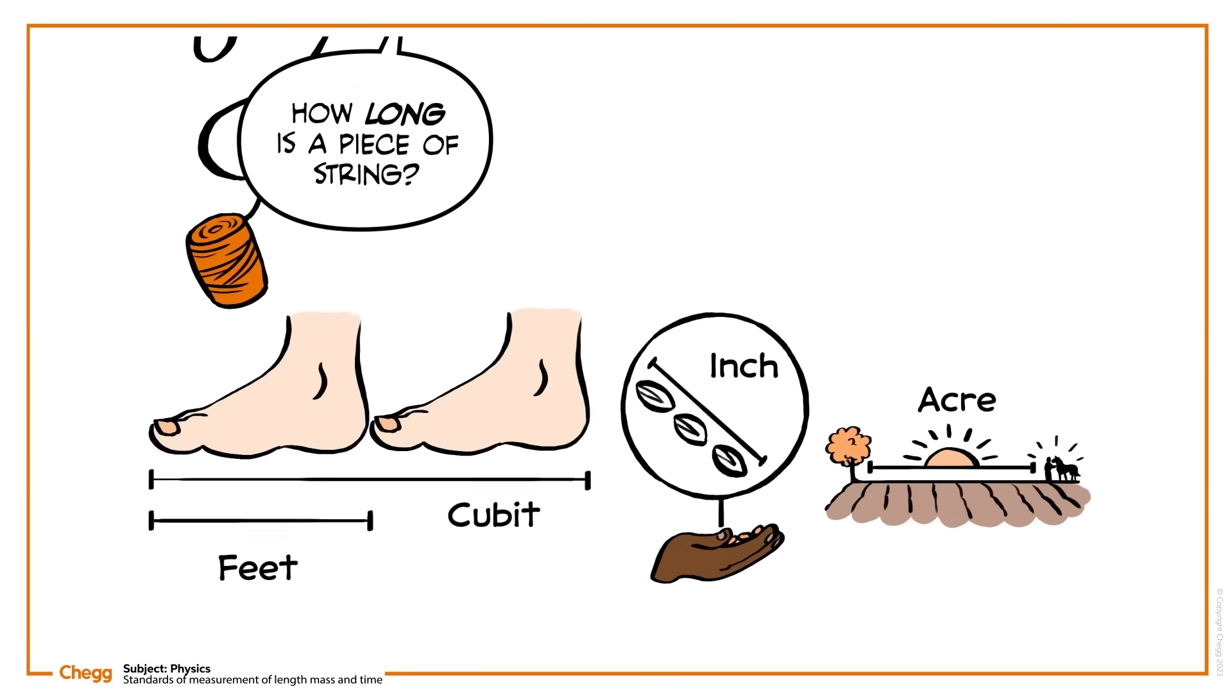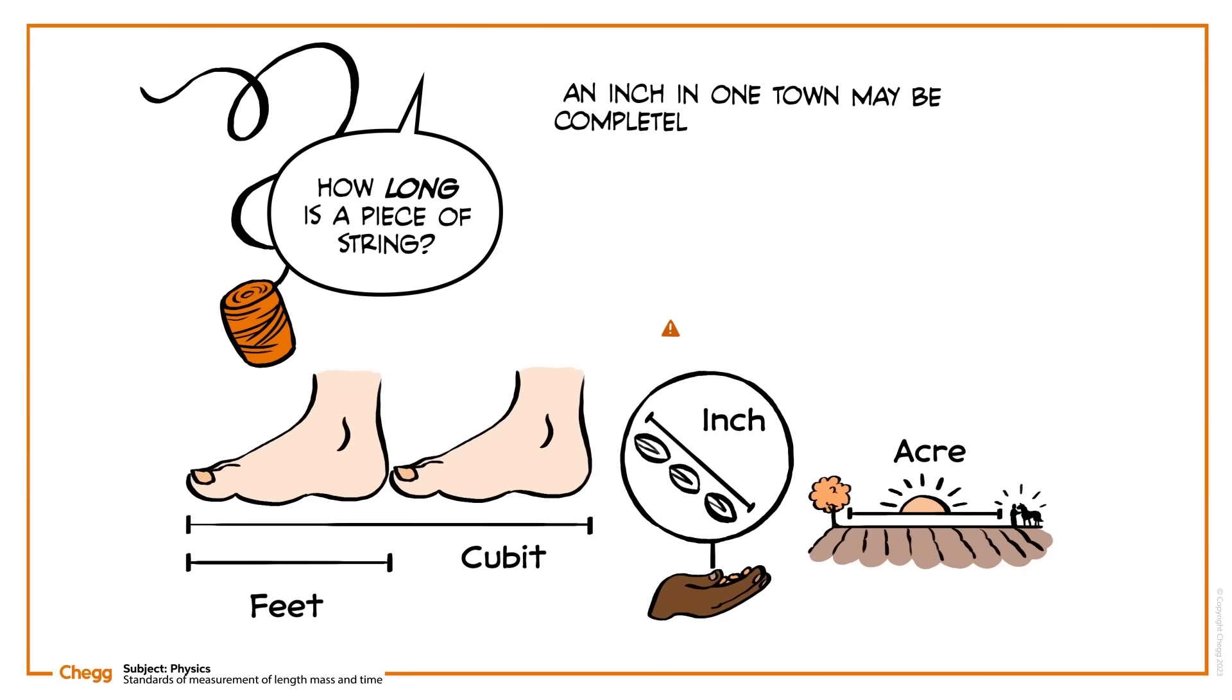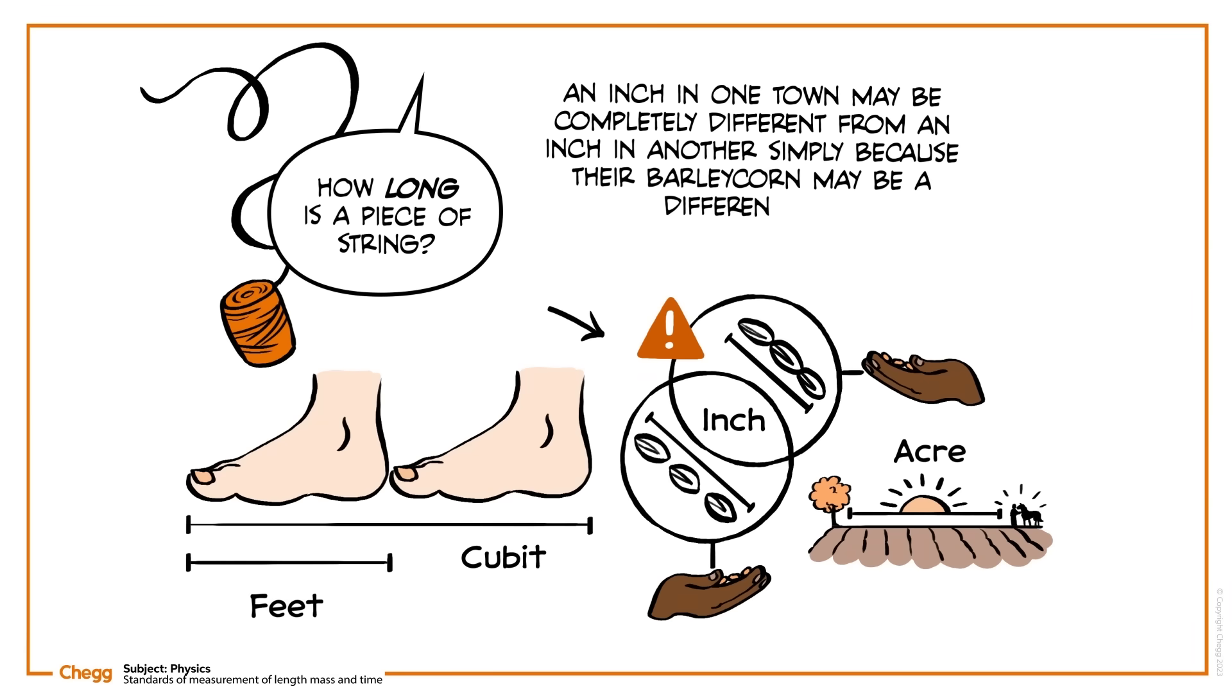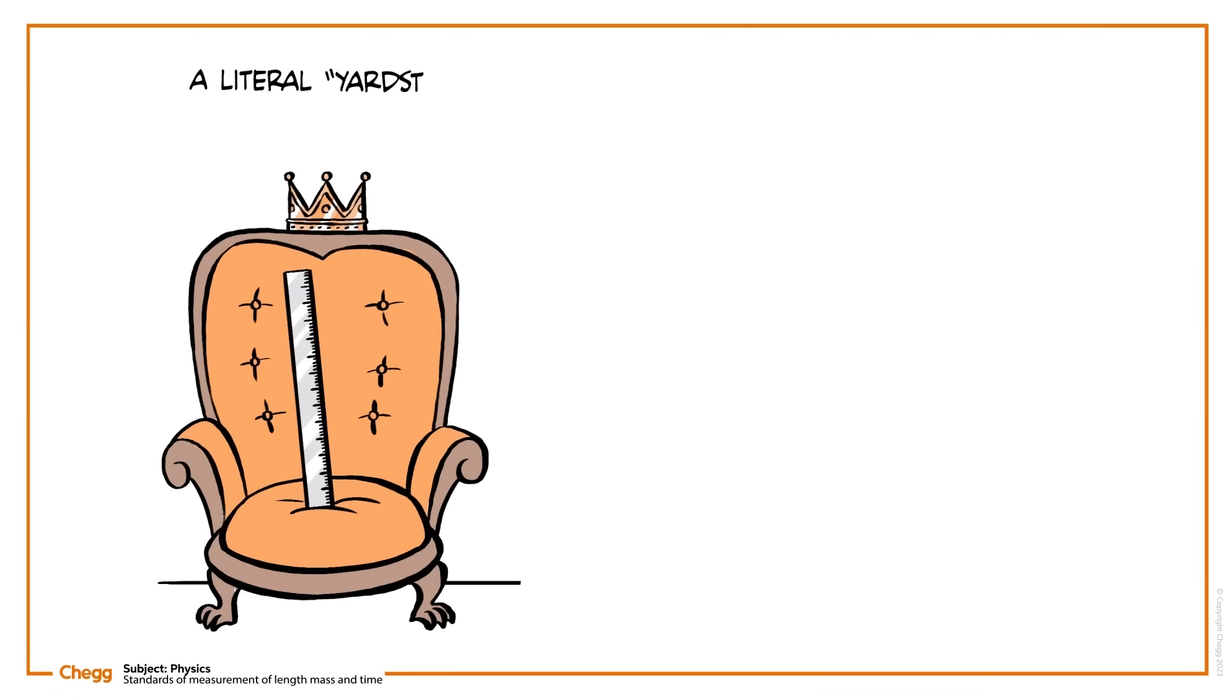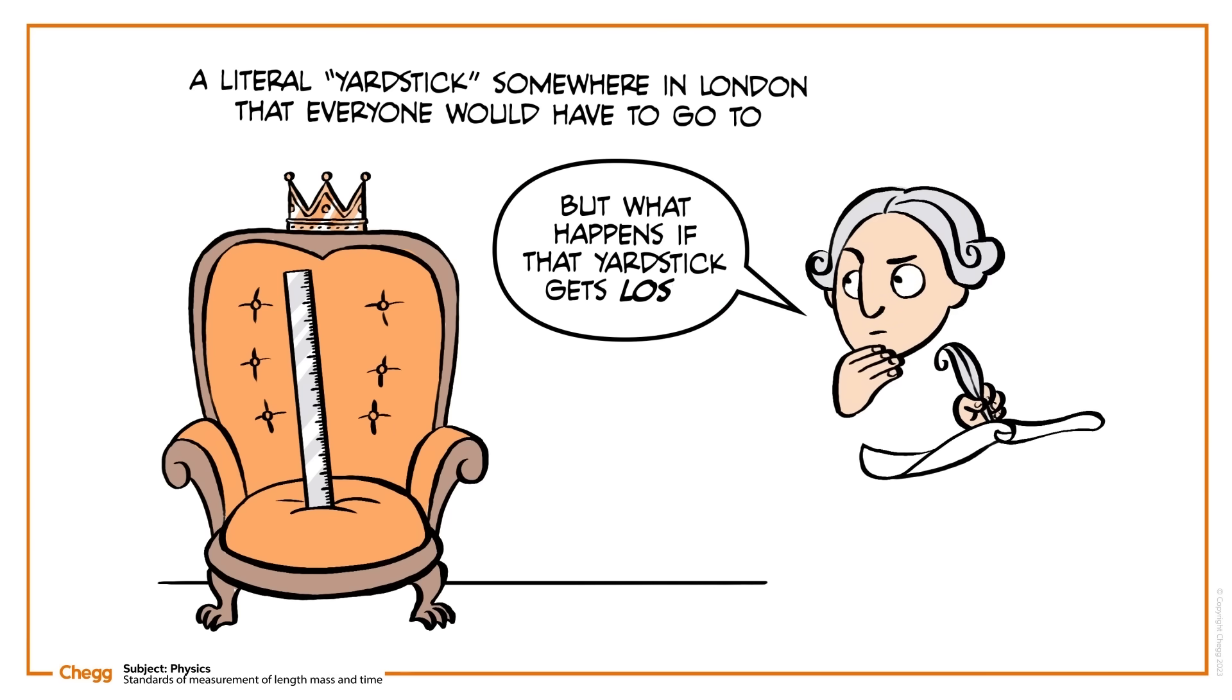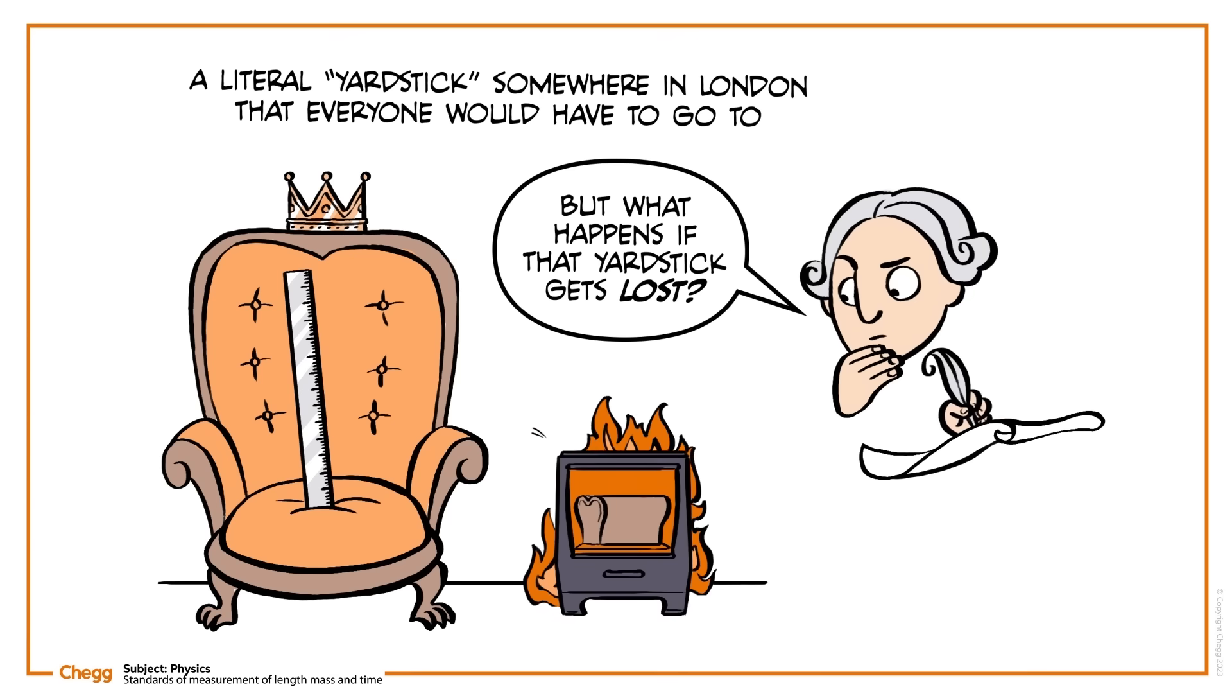As you'll likely have noticed, an inch in one town may be completely different from an inch in another simply because their barleycorn may be a different size. This isn't very useful if you need to build something big, so people used to have to go to the king in an area and reference a measurement against theirs. There would be, for example, a literal yardstick somewhere in London, and everyone would have to go there in order to make copies. But what happens if that yardstick gets lost, perhaps in the Great Fire of London?